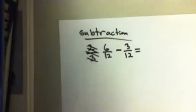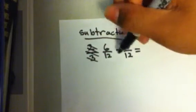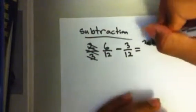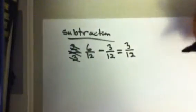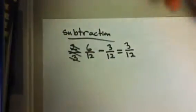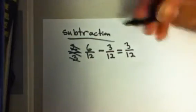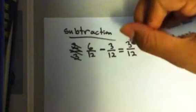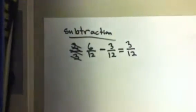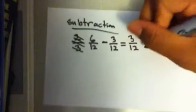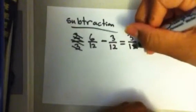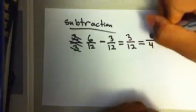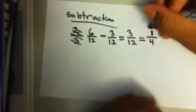This is fairly simple because the denominators are the same. So all you have to do is subtract the top: 6 minus 3 equals 3, so it's 3 over 12. But now what you have to do to get full marks is to reduce it. If they're both divisible by each other, you have to reduce it. So 12 divided by 3 equals 4, and 3 divided by 3 equals 1, giving you 1 over 4. That's a reduced fraction.